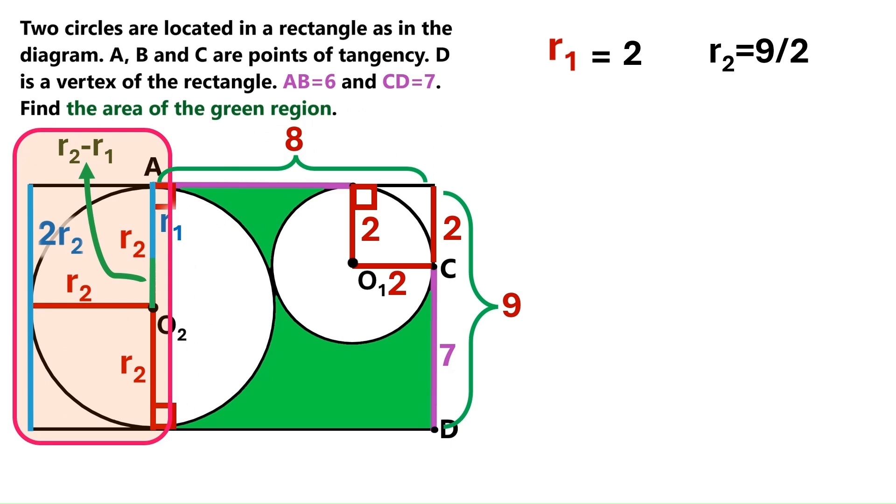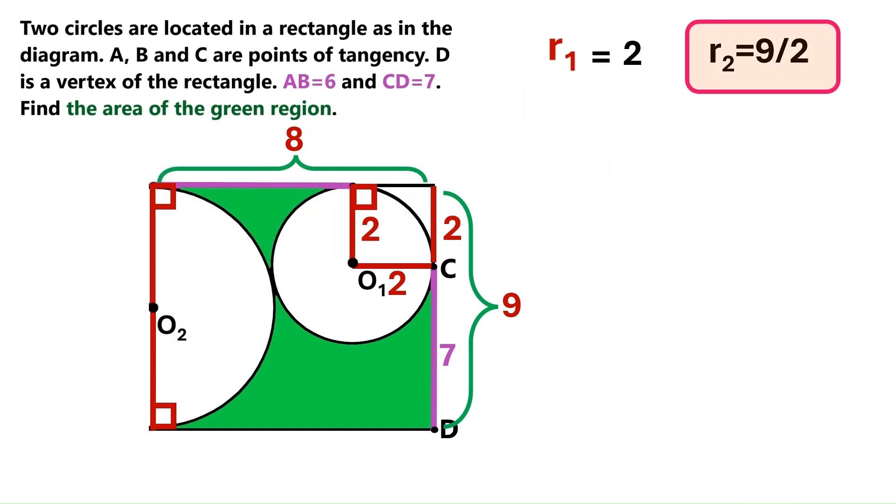And we've got a ton of stuff here, but we won't need any of it anymore, so let's just delete it. And we need to keep in mind that this 9 over 2 is the radius of the big circle, so let's put it over here.